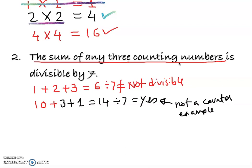This one is a counter example, and you can come up with many counter examples. For example, 15 plus 10 plus 5 equals 30, which is not divisible by 7. So this one is also correct, this is a counter example.